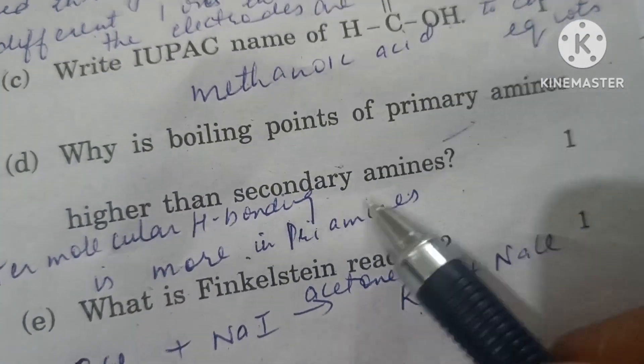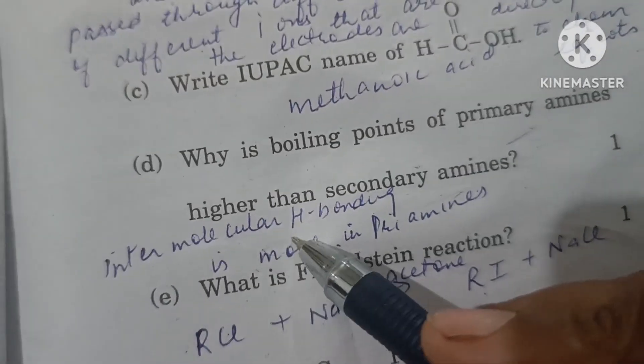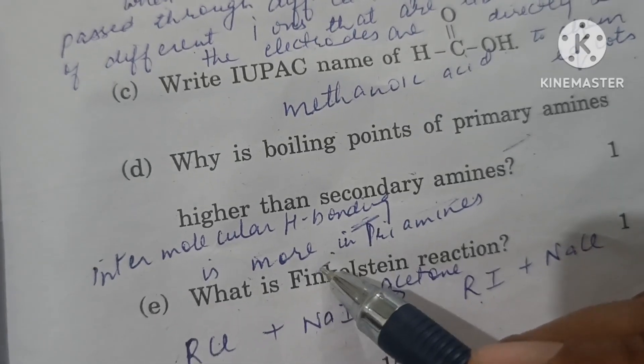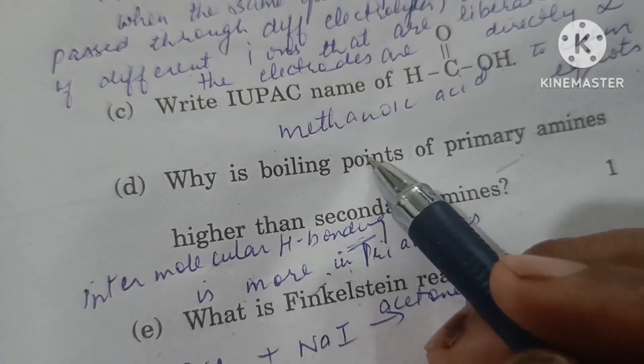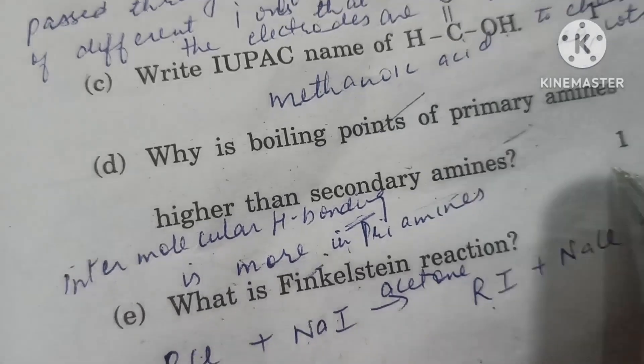Why is boiling point of primary amine higher than secondary? Because in primary amine, intermolecular hydrogen bonding is more, which is difficult to break, so boiling point is high. In secondary, it's less.